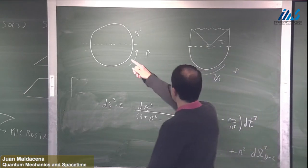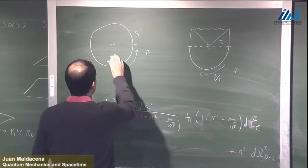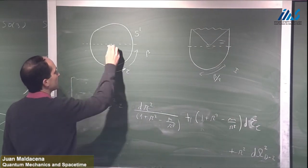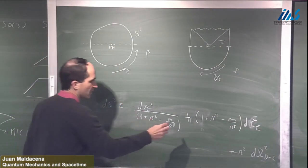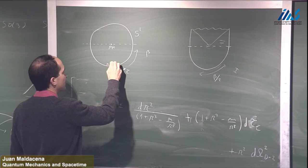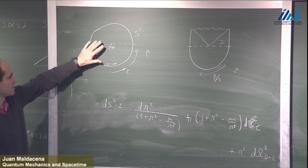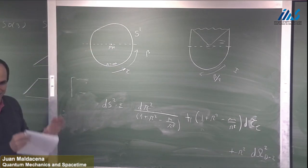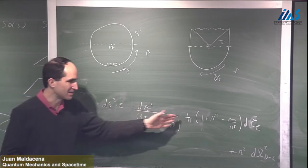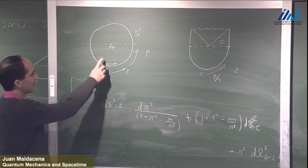In this picture, we use Euclidean time tau. We represent only the tau direction and the radial direction. This point is the horizon radius where the circle shrinks to zero size, and here at r equals infinity is the boundary of AdS. It is a kind of Penrose diagram with a conformal rescaling, where the infinitely far boundary is mapped to a finite position.